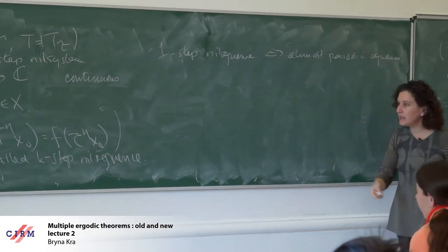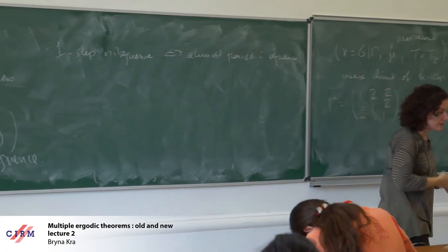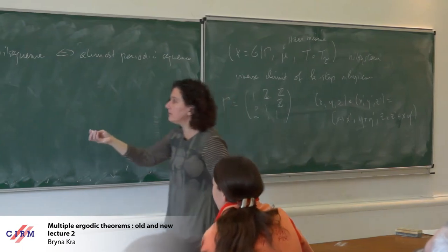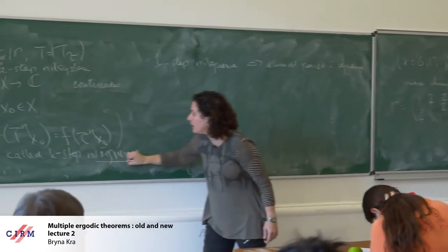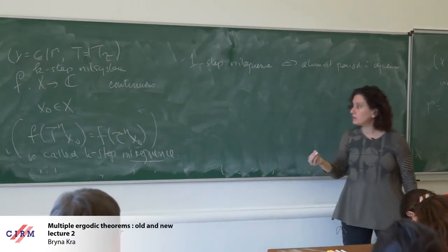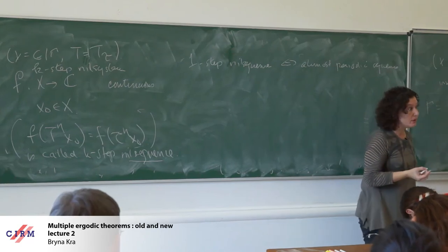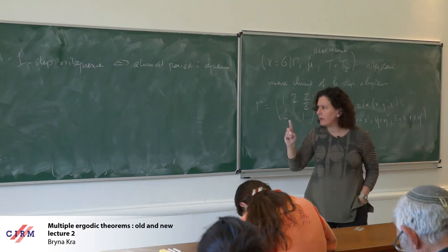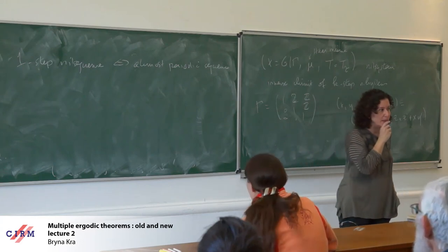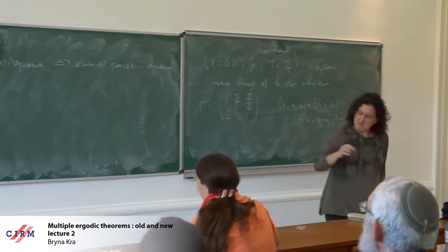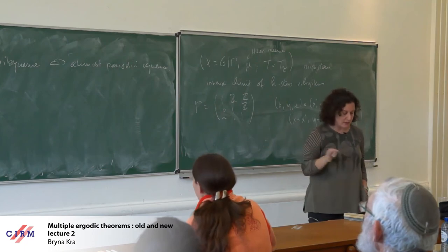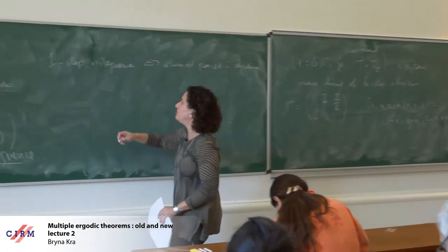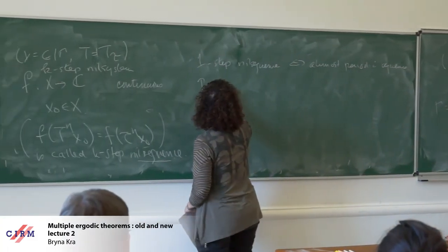This idea of generalizing and evaluating things on a nil system and studying these nil sequences came from an article jointly with Vitaly and Bernard Host. There will be several people speaking about nil sequences next week, and they come up in various contexts. The family of k-step nil sequences has lots of good properties in the sense that it's closed under complex conjugation and under shifting.